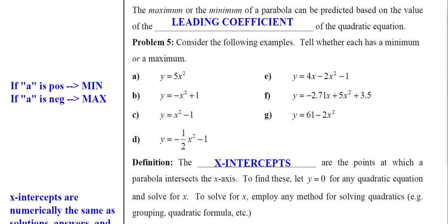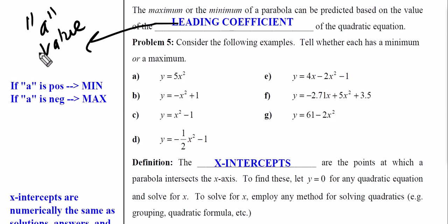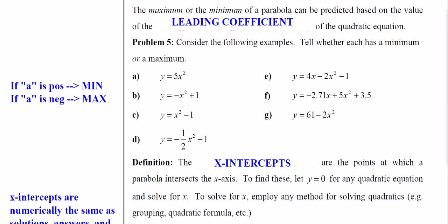How do you know if a quadratic has a maximum or minimum? We don't have to graph it — we just look at the equation instantly, no math required. The maximum or minimum depends on the leading coefficient, which is the a value. We care about the sign of a: if a is positive, it opens upward, so it has a minimum. If a is negative, it opens downward, so it has a maximum.